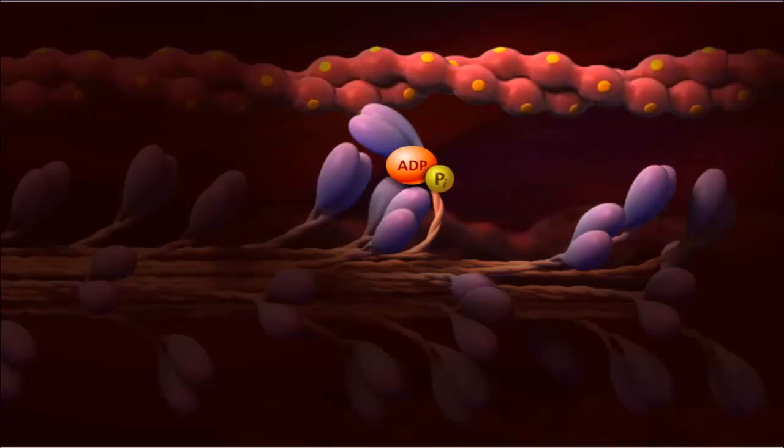An action called the power stroke is triggered, allowing myosin to pull the actin filament toward the M-line, thereby shortening the sarcomere.